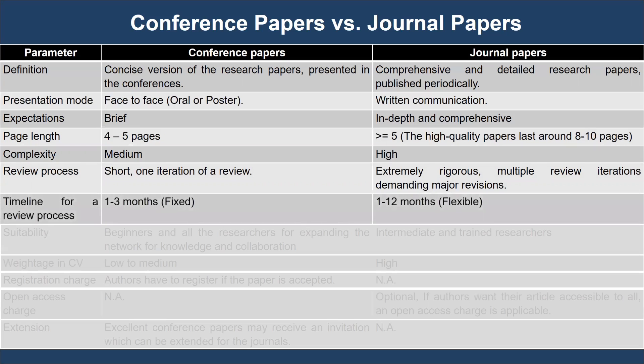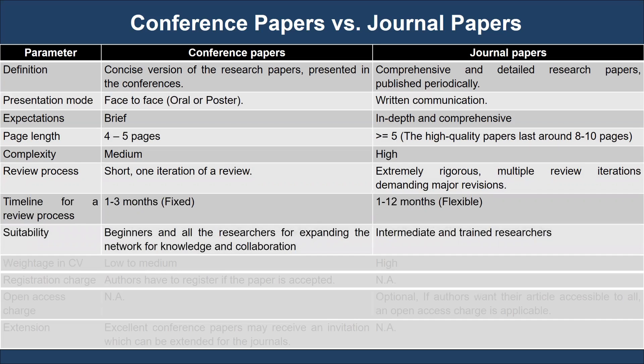The timeline for a review process for a conference is fixed, and one can expect the outcome in 1–12 months, whereas the timeline for a journal review process is flexible, and one can also expect the outcome in 1–12 months. Conferences are highly suitable for beginners and researchers looking to extend their network for knowledge and collaborations, whereas journals are suitable for intermediate and trained researchers. Journal papers are rated high on a CV and bring more significant weightage compared with conference papers.